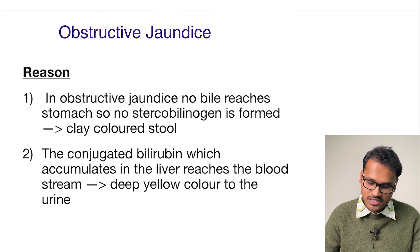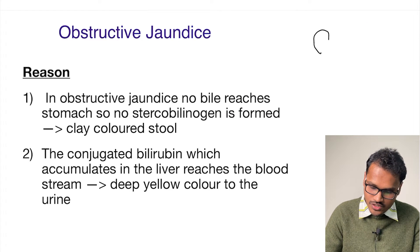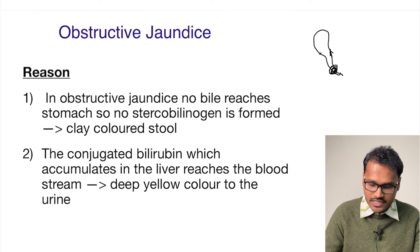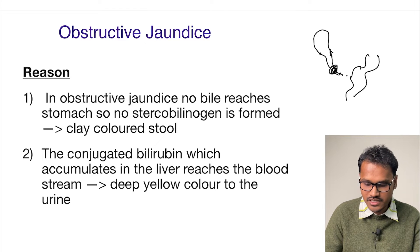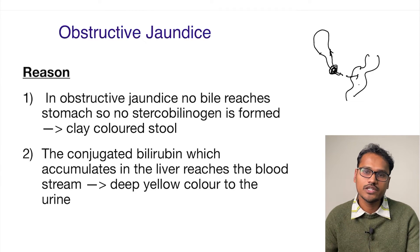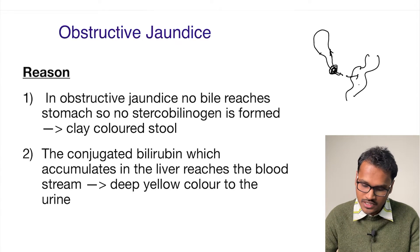Whenever there is obstructive jaundice, the biliary secretions are not coming from the gall bladder — there is some obstruction and it is not being emptied into the duodenal segment. This emptying is not happening, so basically the bile is not reaching the duodenum. So if it is not reaching the duodenum, what is going to happen?